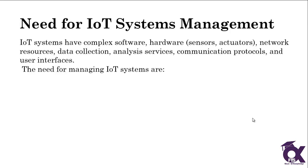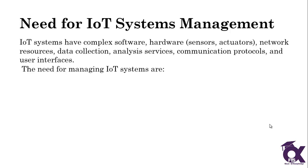In an IoT system, a lot of devices, sensors, and actuators are connected to each other, so it has complex software and hardware including sensors, actuators, and network resources, data collection, analysis, communication protocols, and user interfaces. That's why we need to manage all of the devices — what are the needs to manage these devices?